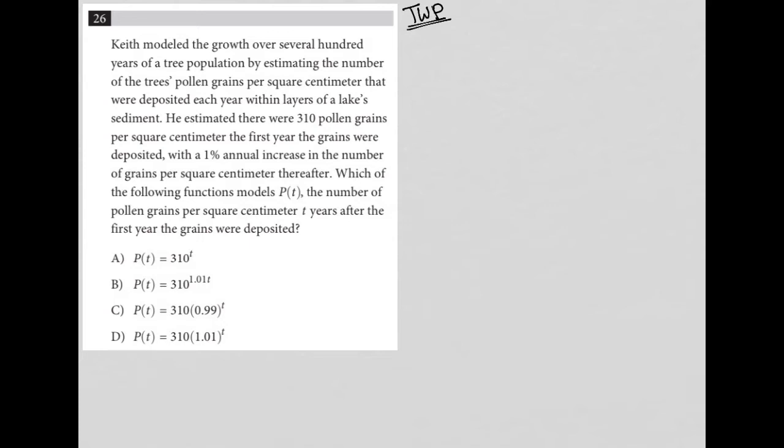So something about tree growth and pollen deposits into a lake. The next sentence says he estimated there were 310 pollen grains per square centimeter the first year the grains were deposited.